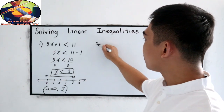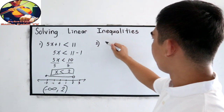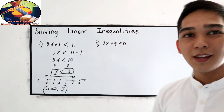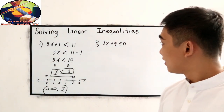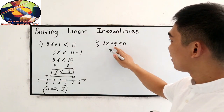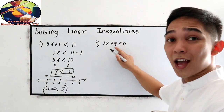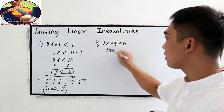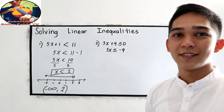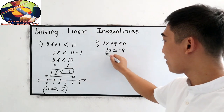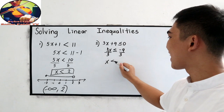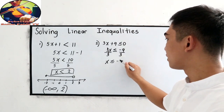Now let us try number 2: 3x plus 9 is less than or equal to 0. First, transpose positive 9, so this becomes 3x is less than or equal to negative 9. Next, divide both sides by 3, so x is less than or equal to negative 3.